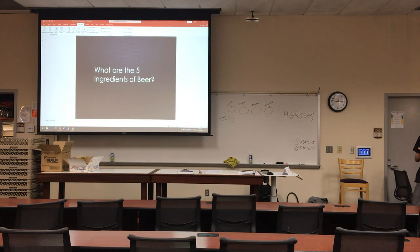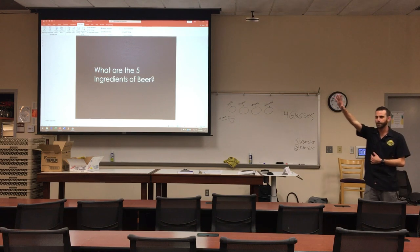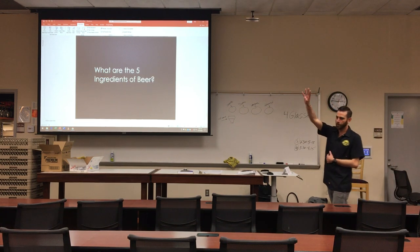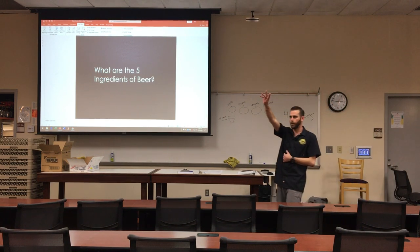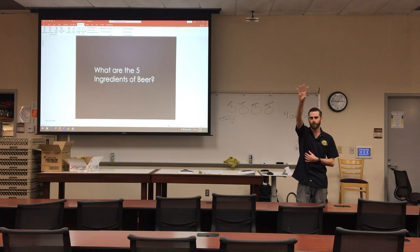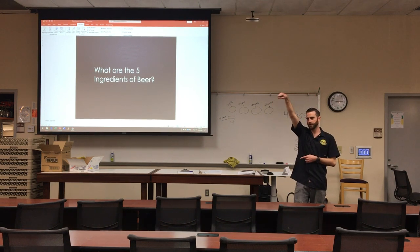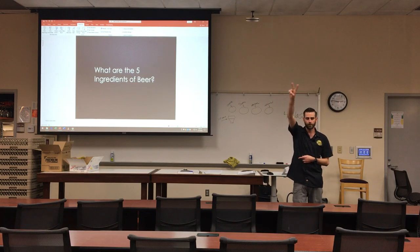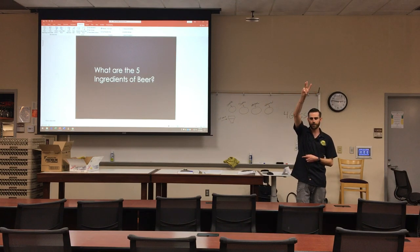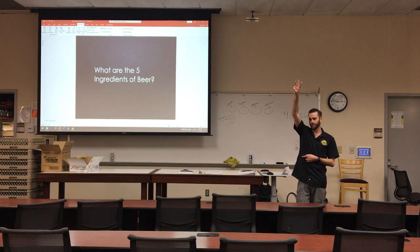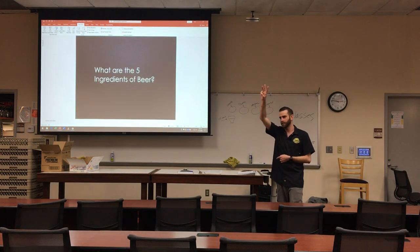Does anybody know the five main ingredients of beer? You've probably only heard of four, but we're going to cover the fifth ingredient. Does anybody know any of them? — Yeast. Yeast is one. — Water. Water. — Hops. Hops. — Sugar. Some form of sugar.